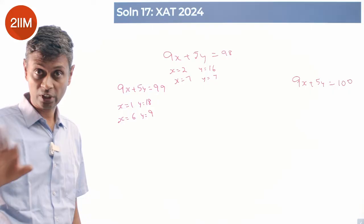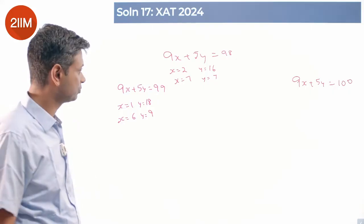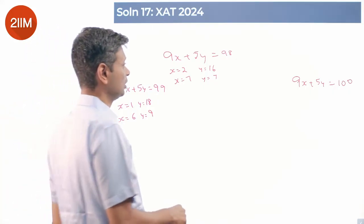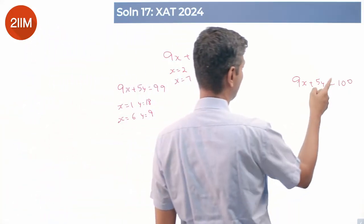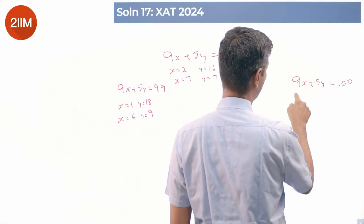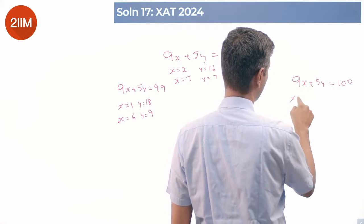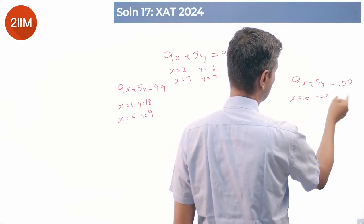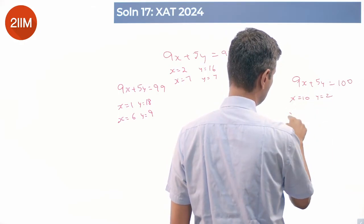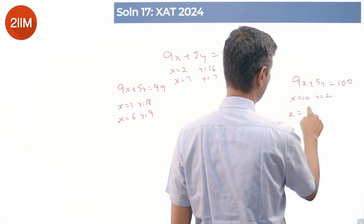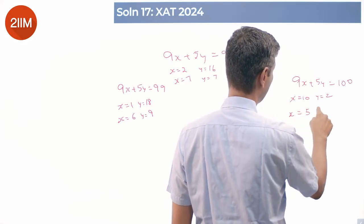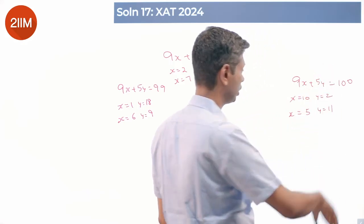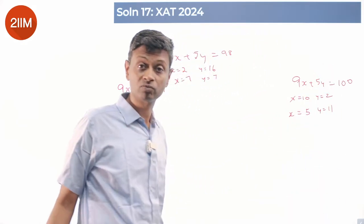For 9x+5y=100: x=10, y=2 gives 90+10=100, that works. Subtracting 5 and adding 9: x=5, y=11 — checking 45+55=100, that also works. So we now have solutions across all five totals.